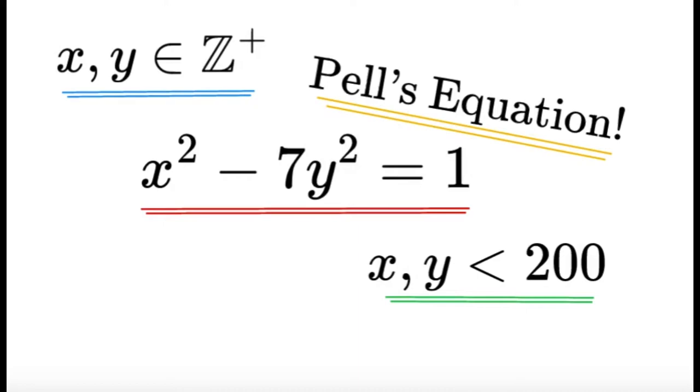This type of equation of the form x squared minus dy squared equals 1 is an example of a Pell's equation. And there is a special way for us to solve these type of equations. The given condition is that d here shouldn't be a perfect square. Because if d was a perfect square, then we can use the concept of factoring. So, Pell's equation assumes that d is not a perfect square.